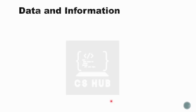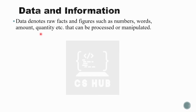Before moving on to data processing, first let us understand what is data and what is information. Data means raw facts and figures. Data denotes raw facts and figures such as numbers, words, amount, quantity, etc., that can be processed or manipulated.